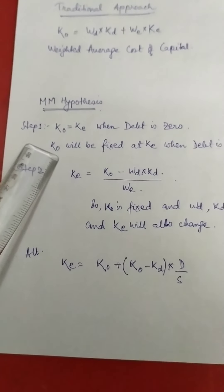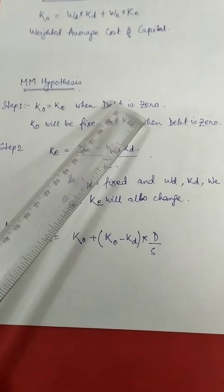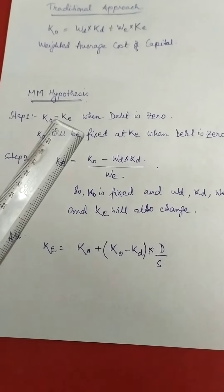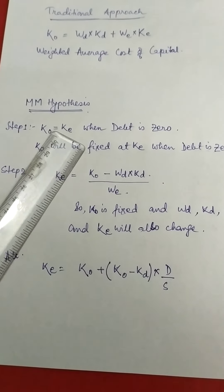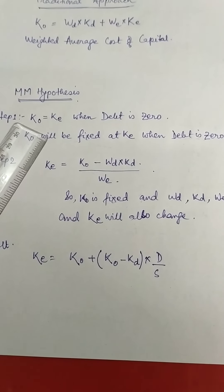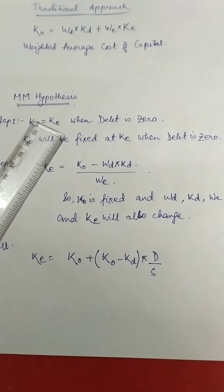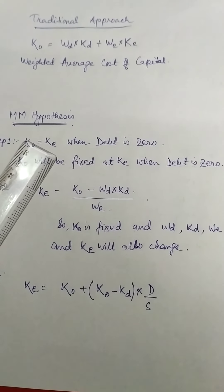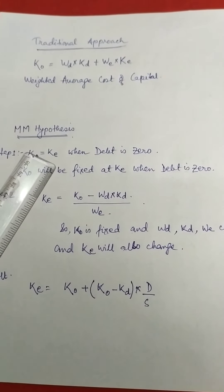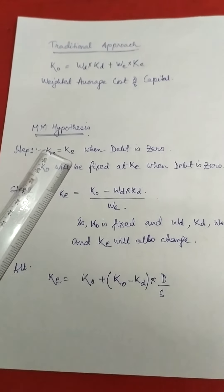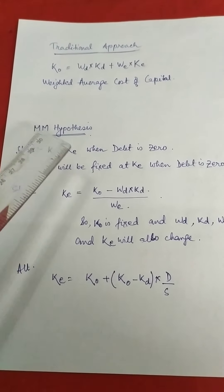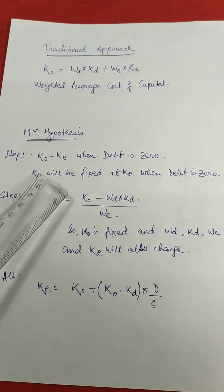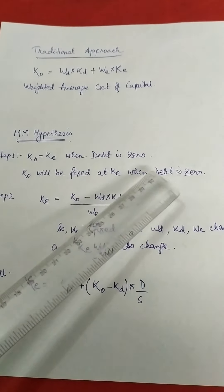In the MM hypothesis, when debt is zero, the cost of capital equals the cost of equity. The cost of capital is fixed and independent of the capital structure. When a firm is started there is equity and no debt, so the initial cost of equity becomes the cost of capital, and it will not change with the increase of debt in the capital structure. The cost of capital will be fixed at KE when debt is zero.